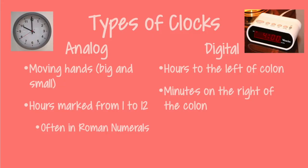There are two types of clocks that I have mentioned. There is the digital clock and the analog clock. On an analog clock, there are moving hands — small and big hands that go around the clock. And normally on the outside of the clock are numbers one to 12, and those represent the hours of the day.